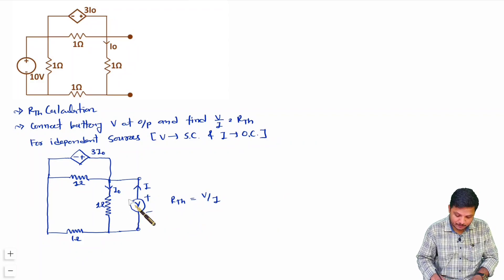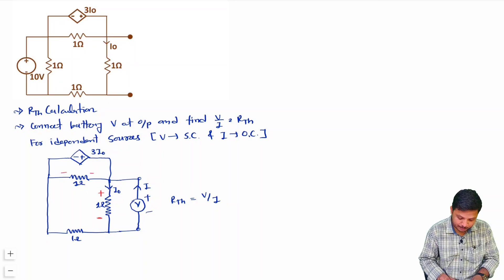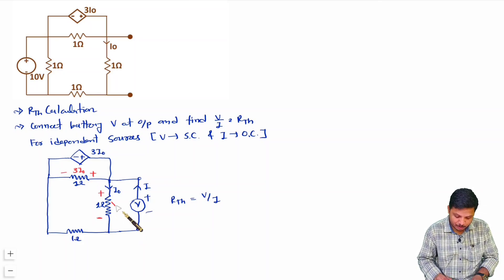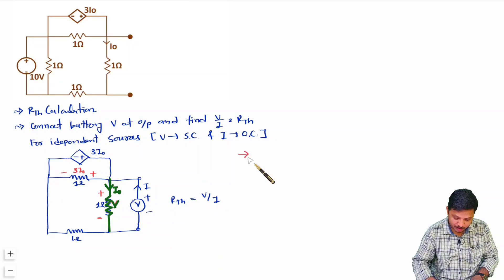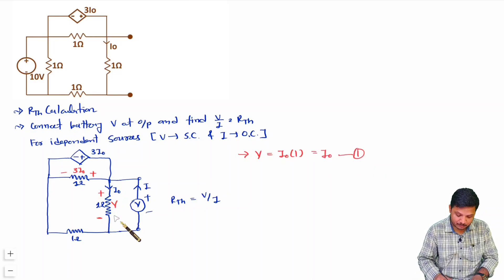After short-circuiting the independent source, our goal is to find V/I, which is RTH. Voltage V appears at the output with plus and minus terminals, and the dependent voltage source has value 3I0. The first basic equation comes from the 1-ohm resistor: V = I0 × 1, so V = I0. This is Equation 1.